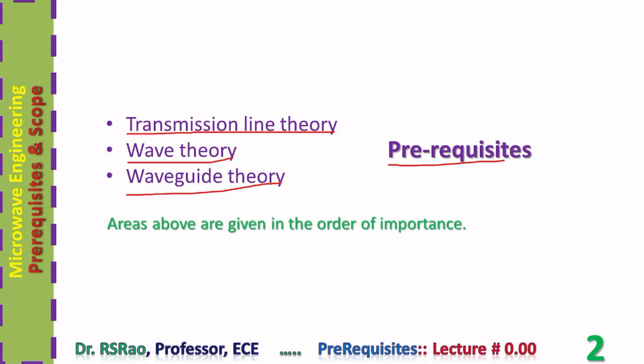Without any one of these three prerequisites, it is simply not possible to have a grip over microwave engineering. Transmission line theory is considered the most important prerequisite. Since microwave engineering is about electromagnetic waves, a good understanding of wave theory is naturally required. Wave guide theory concerns hollow pipe wave guides — most microwave components are made with rectangular wave guides, whose functioning requires a thorough understanding of hollow pipe wave guides.